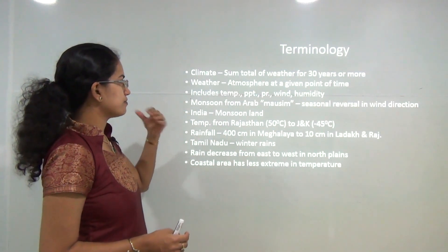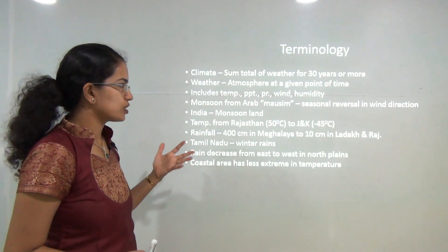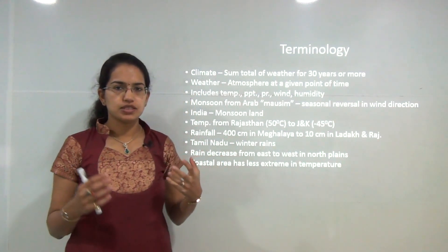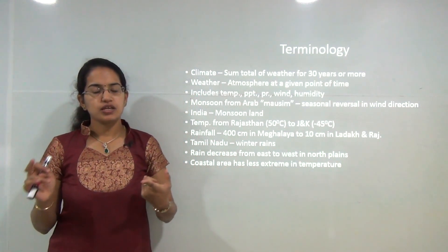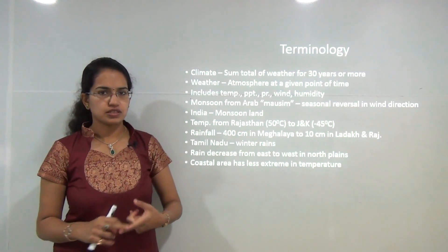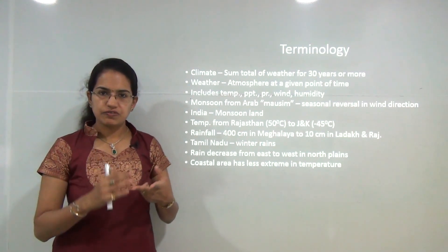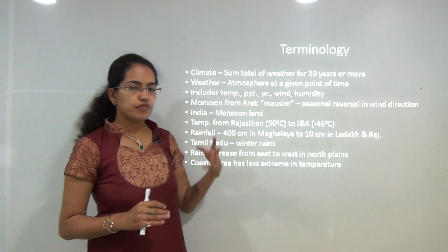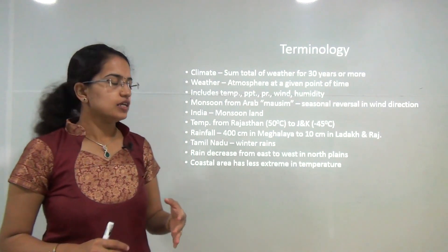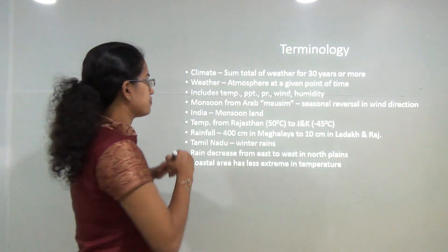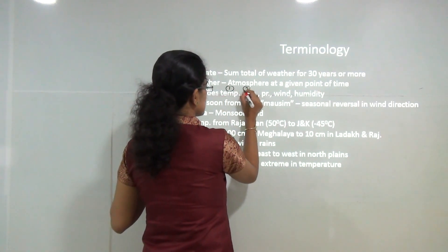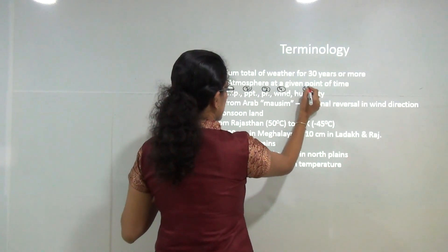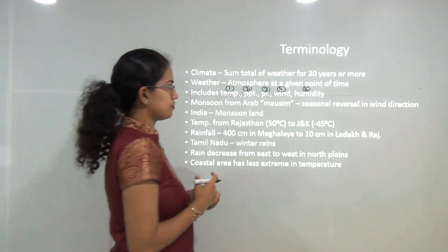Whenever we talk about weather or climate, there are a few parameters we must refer to. The first is the temperature of the region, the amount of rainfall, the pressure conditions, the wind flow, and the humidity. These five are the primary things you must look for to understand the climatic condition of a region.